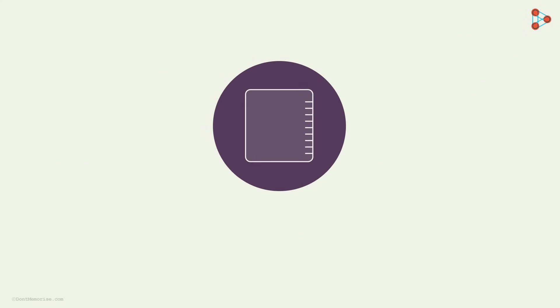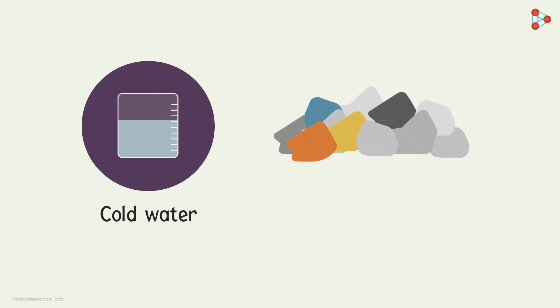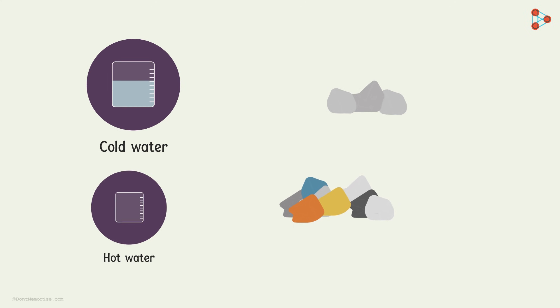First, we take a beaker half filled with cold water and see how the metals react with it. Some of the metals will react with cold water, but most of them won't. Out of those metals which didn't react with cold water, we try to add them to hot water and see how they react.